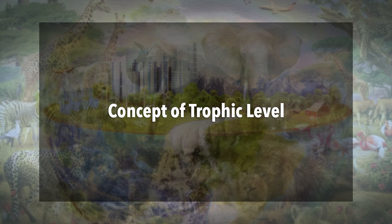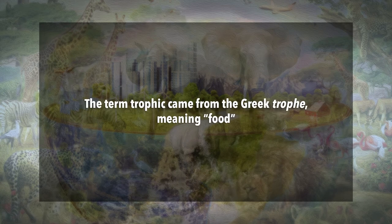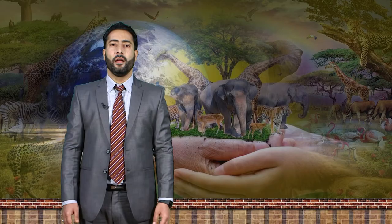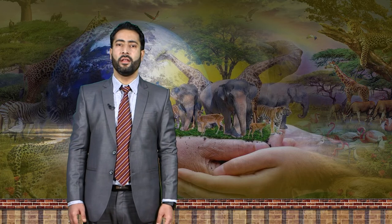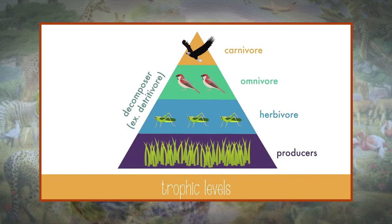First of all, let us discuss the concept of trophic level. The term 'trophic' came from the Greek 'trope', meaning food. A trophic level refers to a level or a position in a food chain, a food web, or an ecological pyramid occupied by a group of organisms having a similar feeding mode.